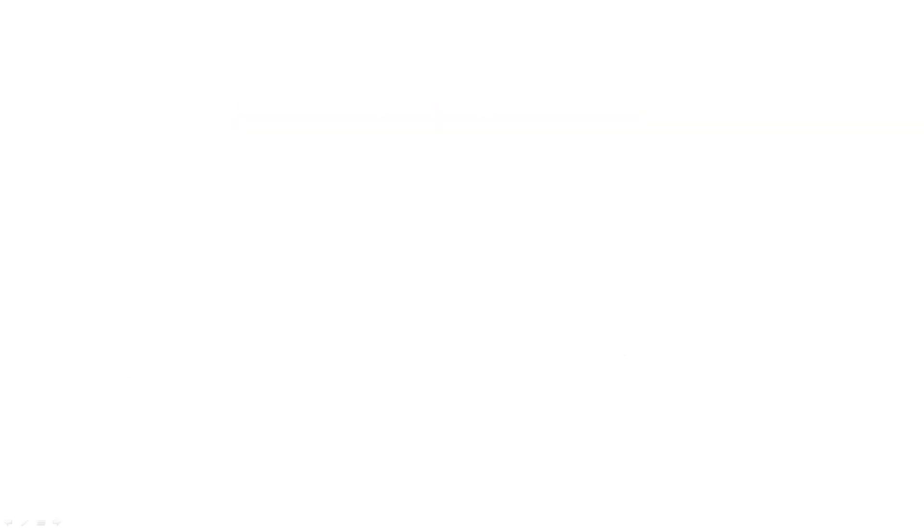So now let's actually use dimensional analysis to solve a simple problem. You have a patient that comes in, they say they weigh 150 pounds and you want to convert this to kilograms. So on the left side we'll write down the information that we have available to us which is 150 pounds and on the right side where we want to get to which is kilograms. Now all we have to do is use a conversion factor to convert pounds to kilograms.